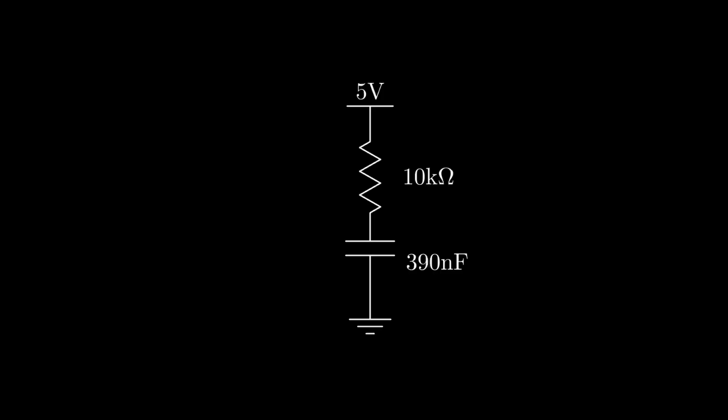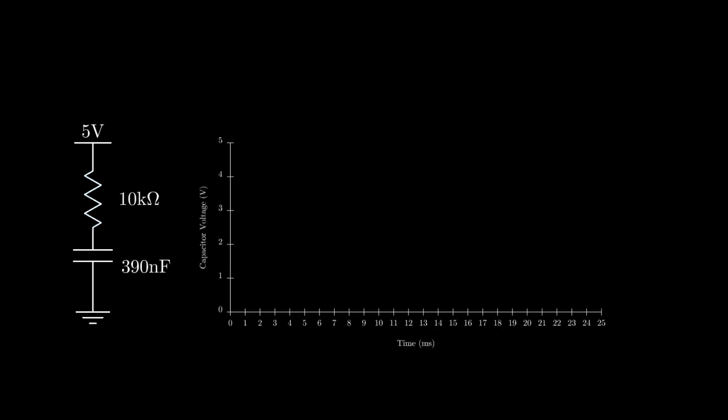The capacitor will charge up with positive charge on the plate connected to the voltage source and negative charge on the plate connected to ground. If we plot the capacitor voltage over time we can see that we get an exponential curve reaching up to five volts. The curve can be described by this exponential equation which starts at zero when time t is zero and approaches five volts as t approaches infinity.